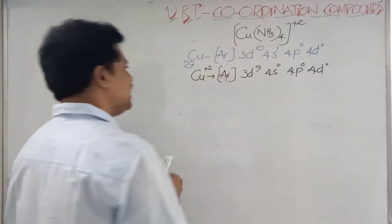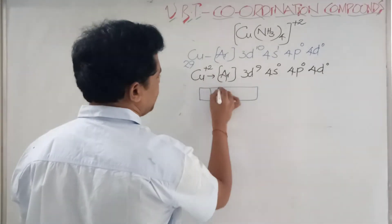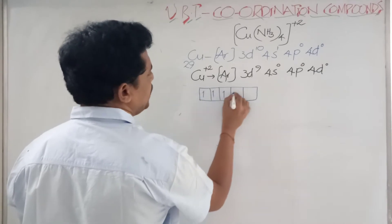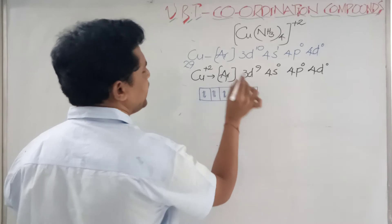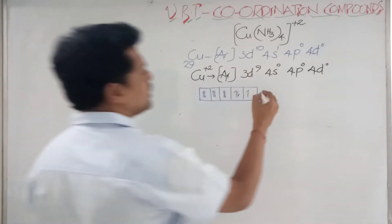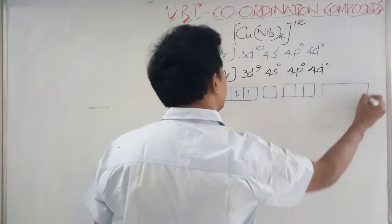When it is 3d⁹ electronic configuration, it will be like this: one, two, three, four, five, six, seven, eight, nine - one unpaired electron is here. S orbital, p orbitals, then d orbitals.